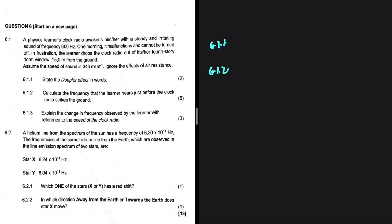A physics learner's clock radio awakens her with a steady and irritating sound of frequency 600 Hz. One morning it malfunctions and cannot be turned off. In frustration, the learner drops the clock radio out of a fourth story dorm window, 15 meters from the ground. Assume that the speed of sound is 343 m/s. Ignore the effects of air resistance.